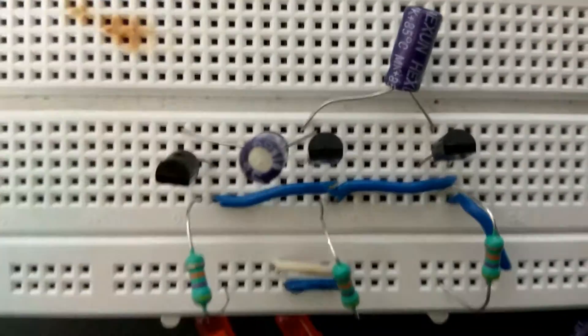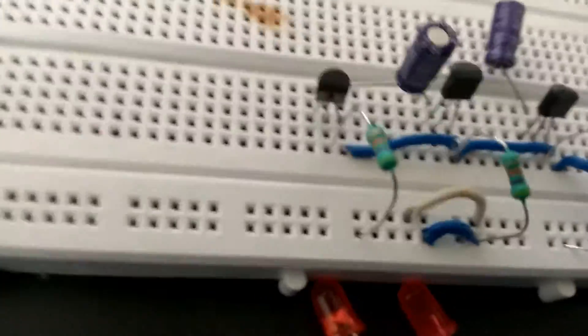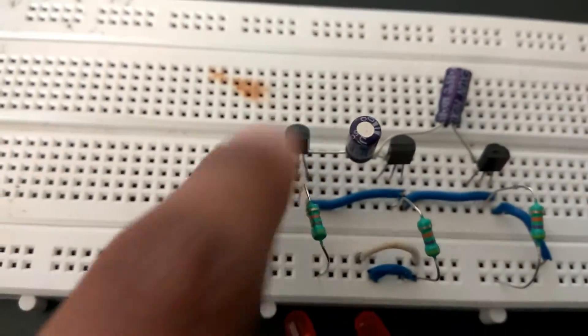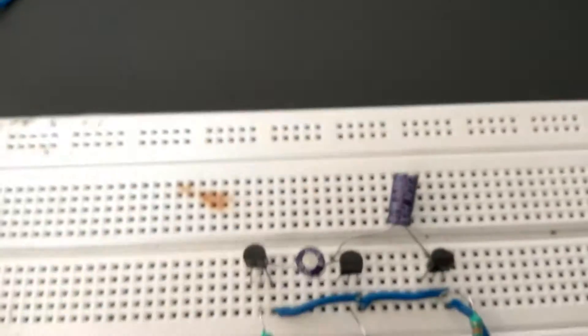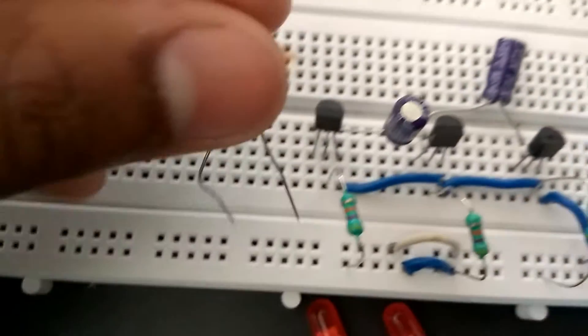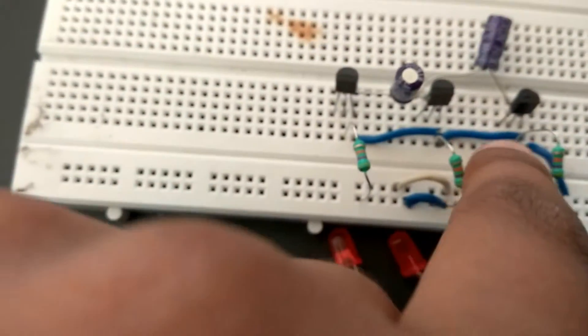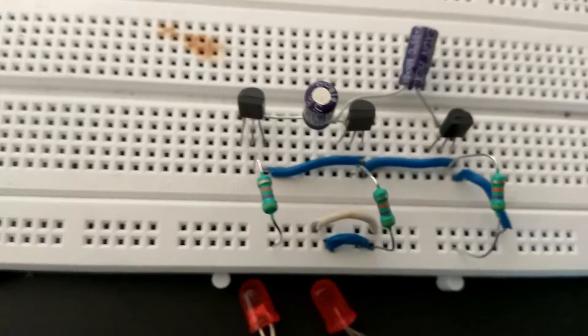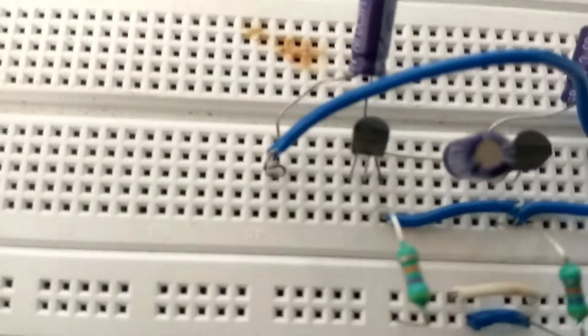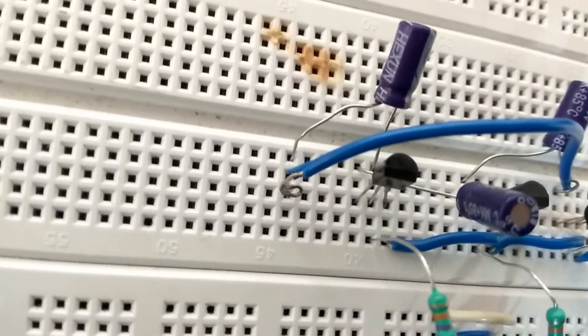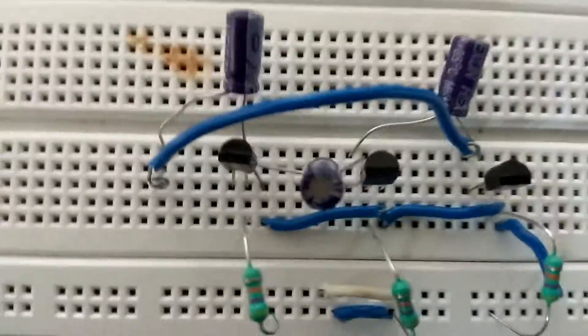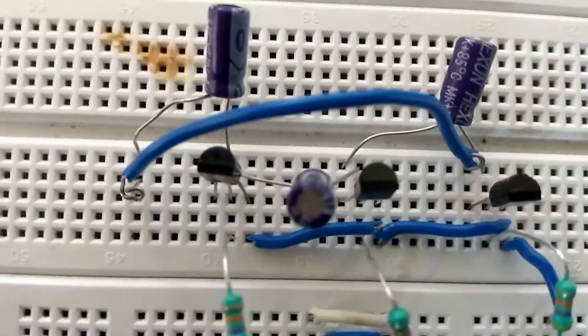For the third transistor, do the same, but the positive terminal will go to the collector of the first transistor. Use a breadboard connector: negative terminal to the base of the first transistor, positive terminal through a breadboard connector to the collector of the third transistor.